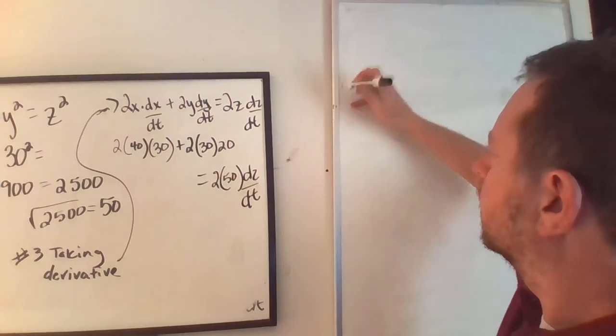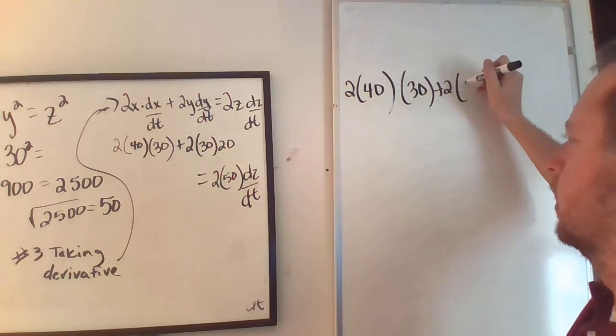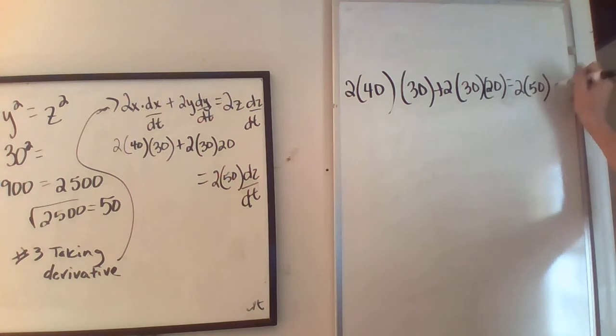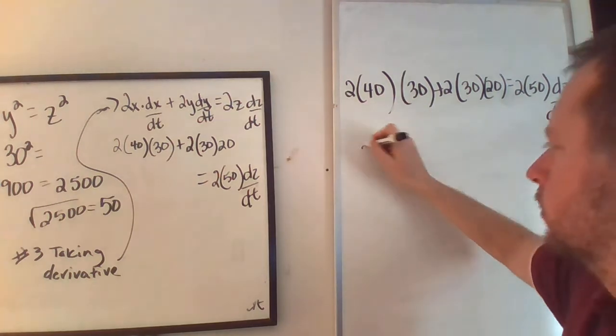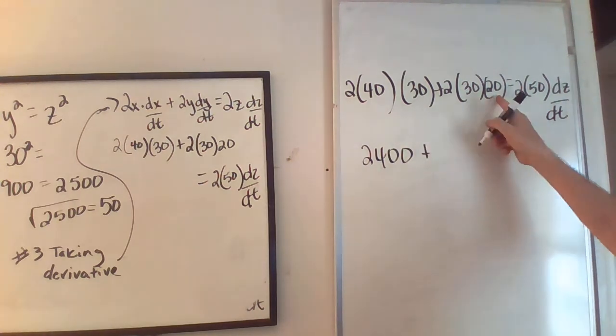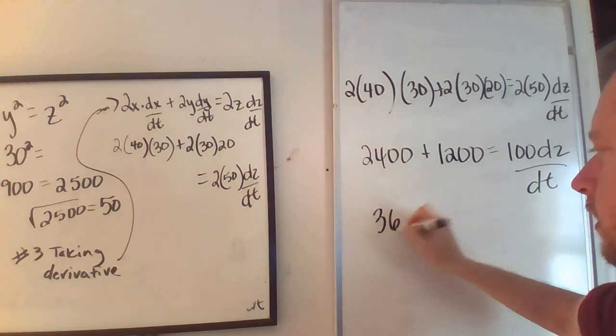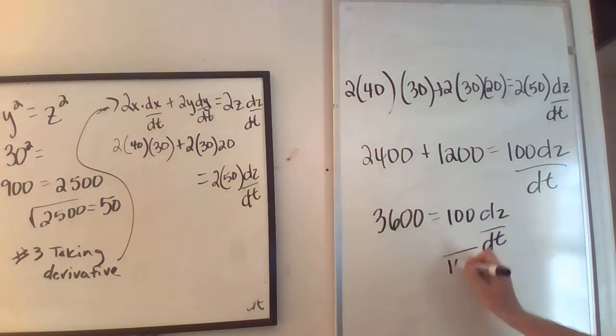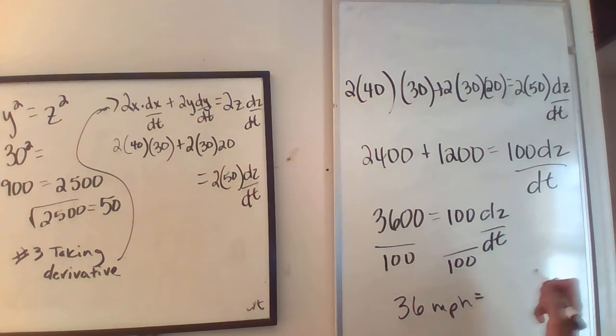We're going to say 2 times 40 times 30 plus 2 times 30 times 20 is equal to 2 times 50 times dz/dt. This is 2400 plus 1200 is equal to 100 times dz/dt. This is 3600 is equal to 100 dz/dt. I'm going to divide by 100 and I'm going to get that 36 miles per hour is equal to the speed at which these two ships are moving apart.